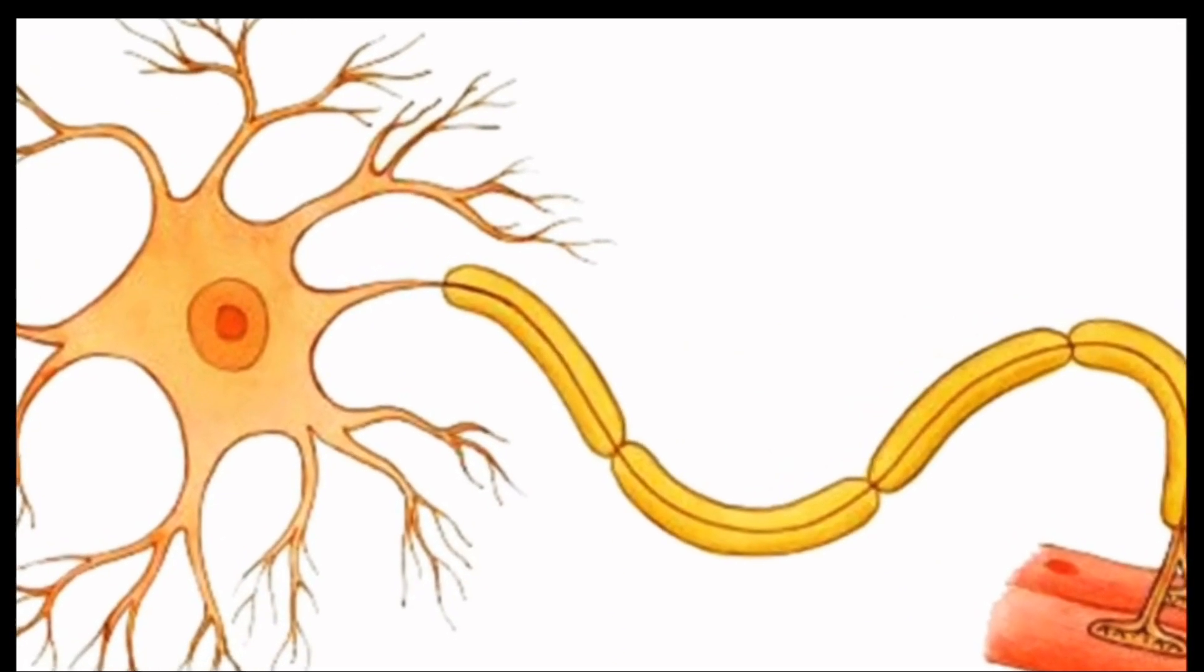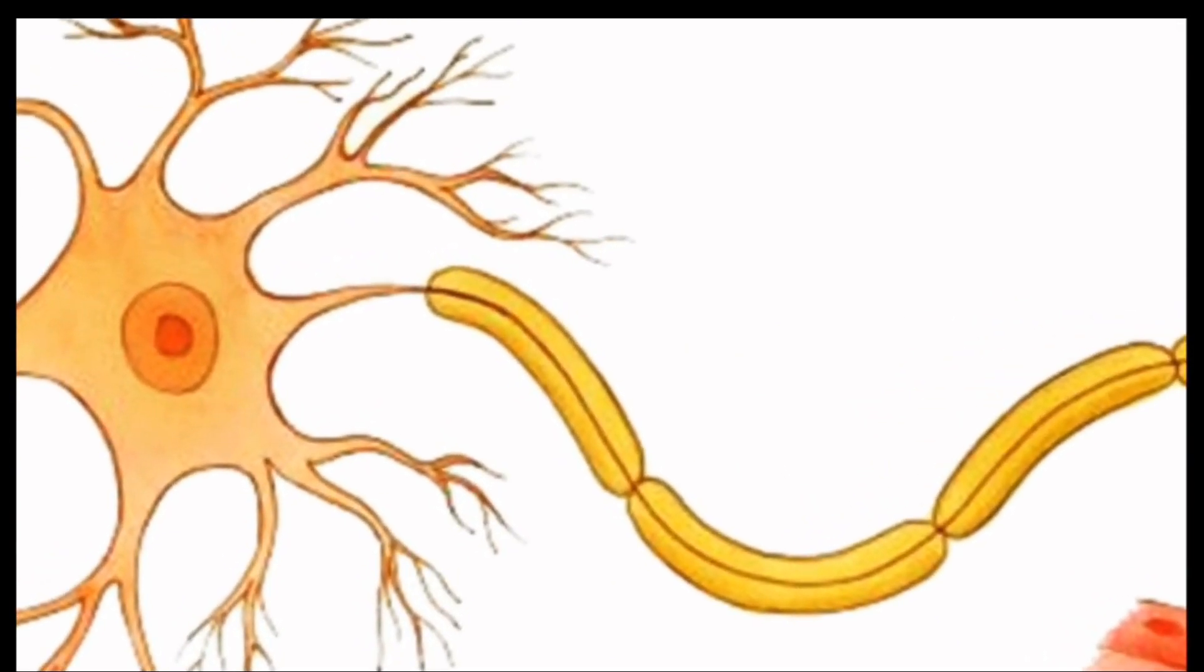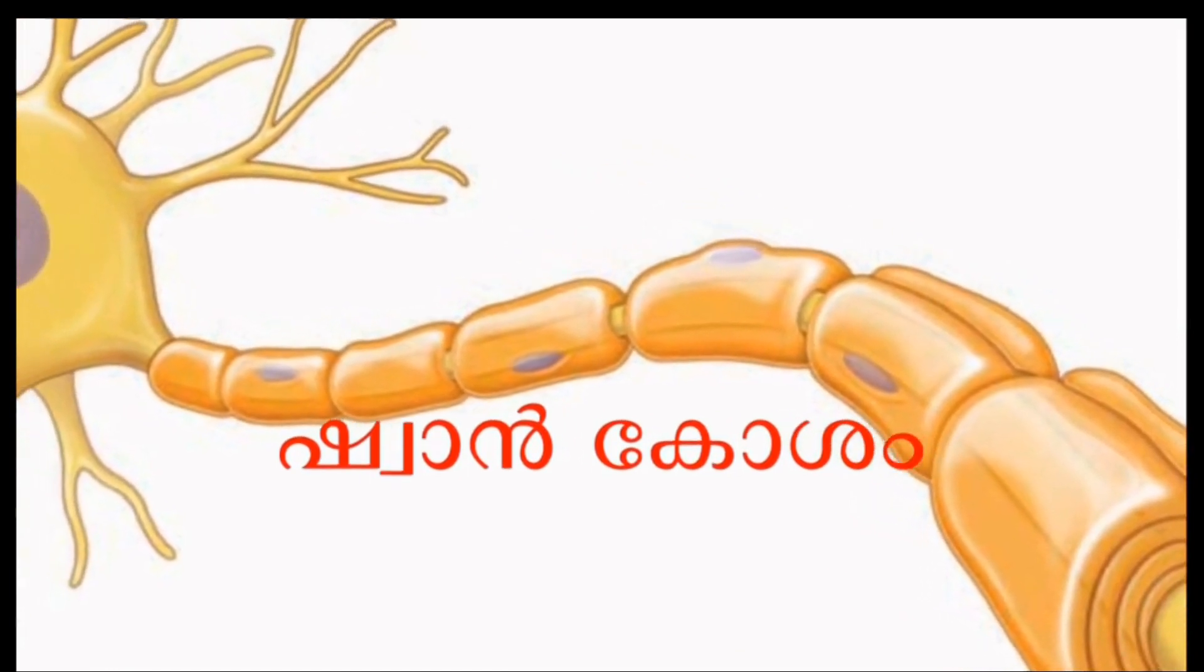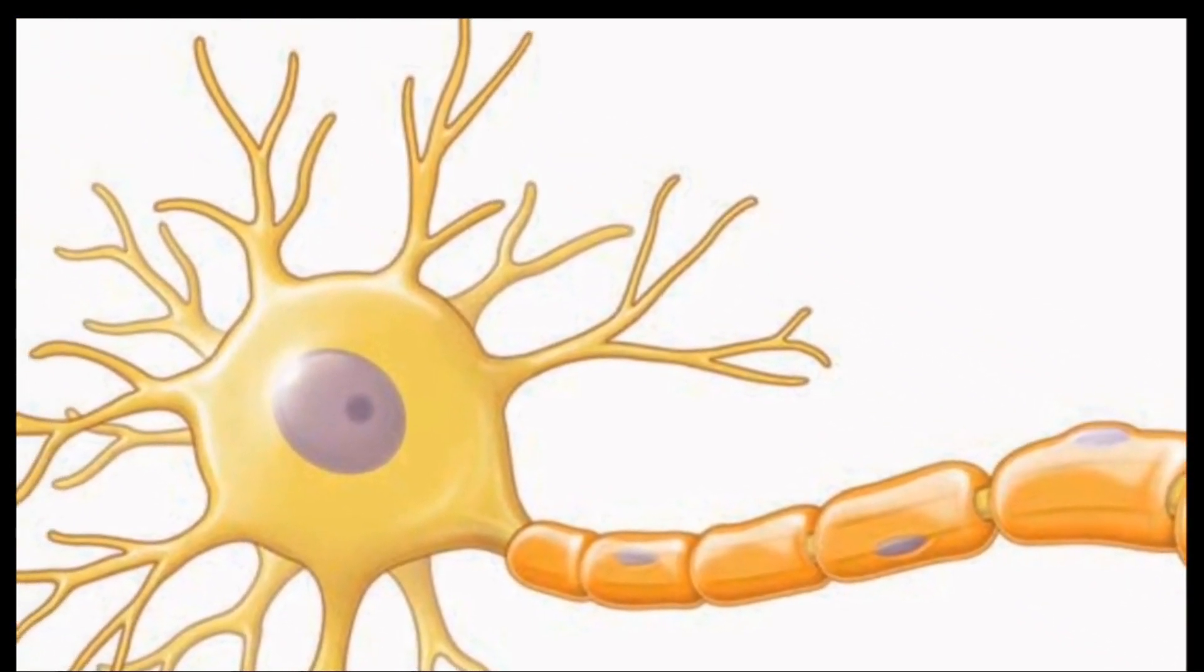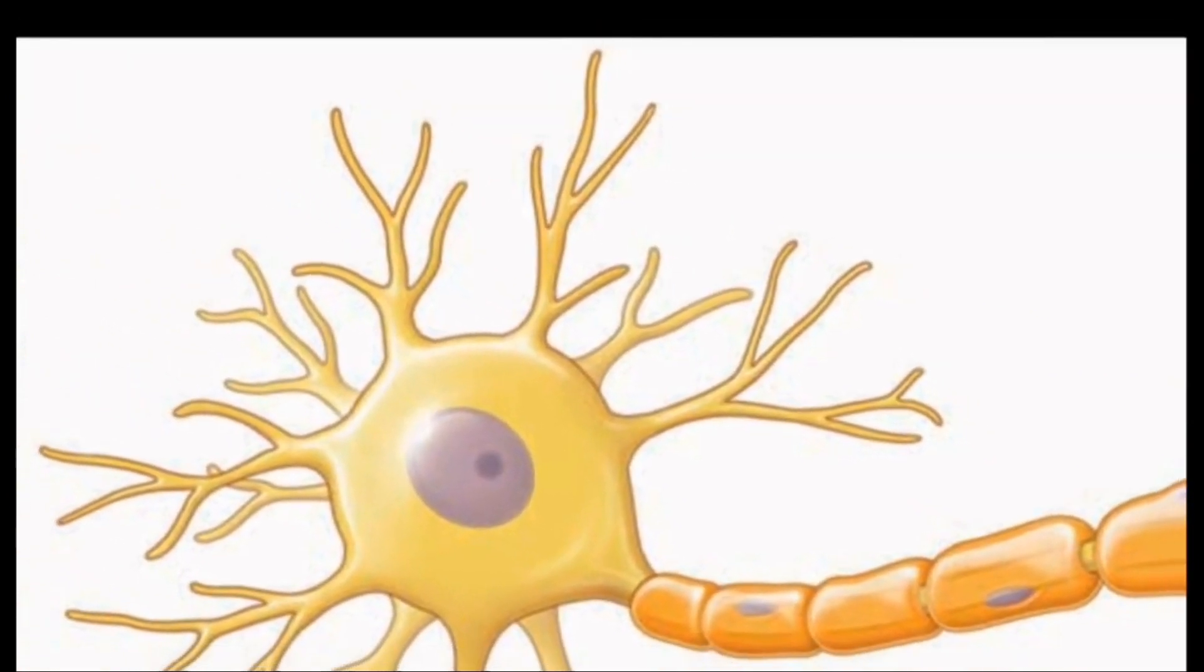Now one more part is left here. You can see a covering around the axon. It is encircled around the axon, and this covering is made up of another kind of nerve cell called Schwann cells, the function of which will be also studied in detail.